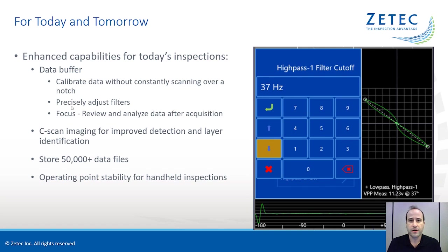Another benefit of the data review buffer is focus. It can be difficult to pay attention to how you're scanning while watching the display simultaneously. With this data review mode, you can scan your inspection area, and then you can stop, put down the probe, and then you can review the data after the scan. This allows you to focus all your attention to flaw detection.